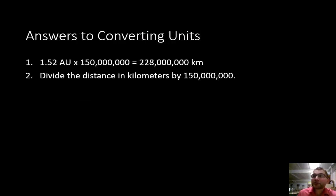All right, answers to converting our units. Number one, 1.52 astronomical units times 150 million gives us 228 million, and that would be the units would be in kilometers. And then the answer for number two, divide the distance in kilometers by 150 million. If you have any questions over these two converting units questions, please make sure that you see me.